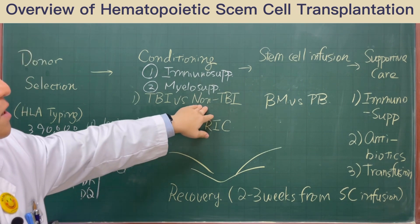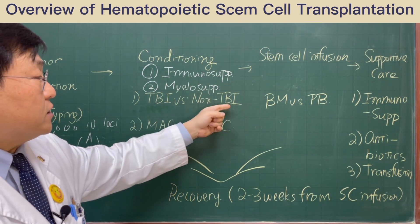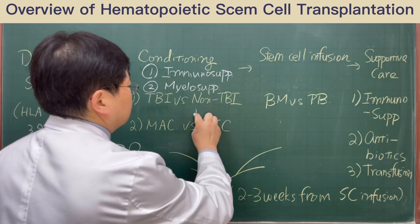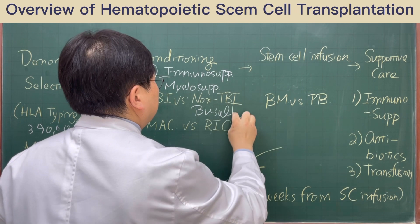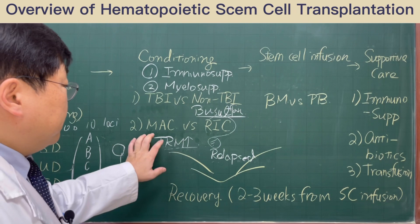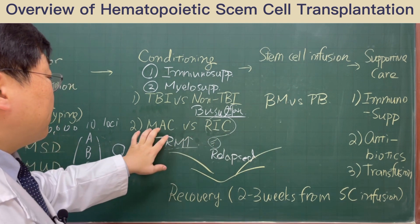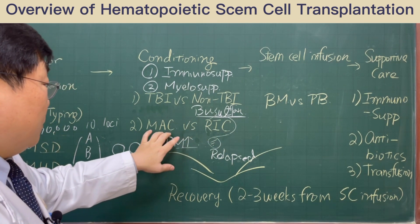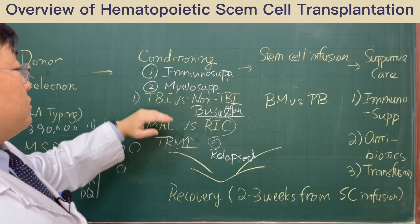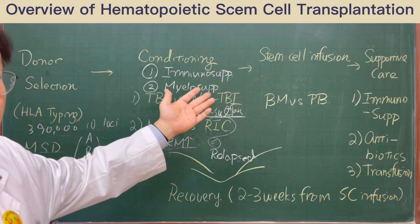When we choose non-TBI conditioning, we do not use irradiation. Instead, we use drugs such as busulfan, some alkylating agent, etc. There are two intensity types of conditioning: myeloablative conditioning and reduced-intensity conditioning. Myeloablative conditioning increases the dose of drug and radiation up to maximum intensity to remove all immunologic function and all disease cells, including malignant cells.